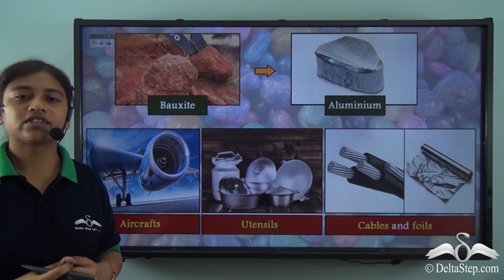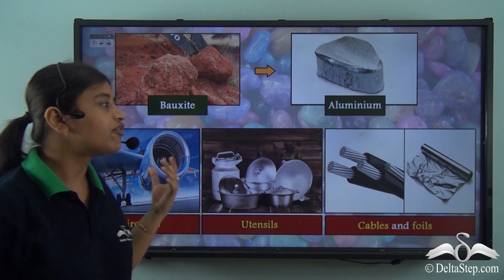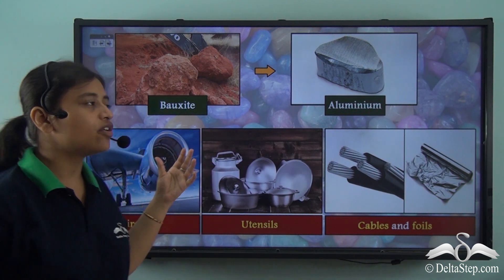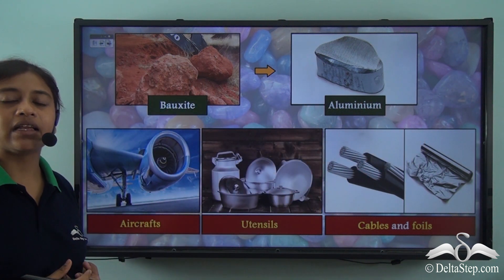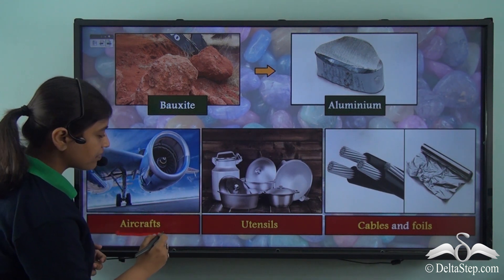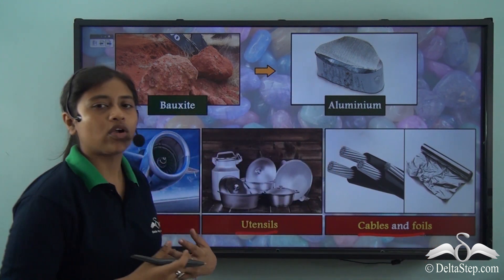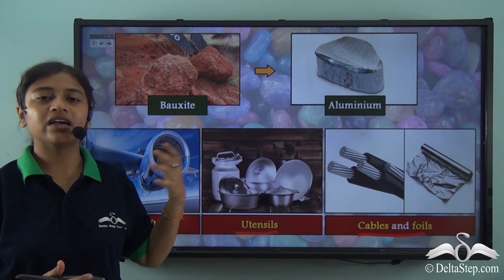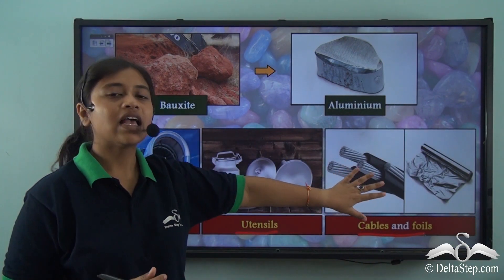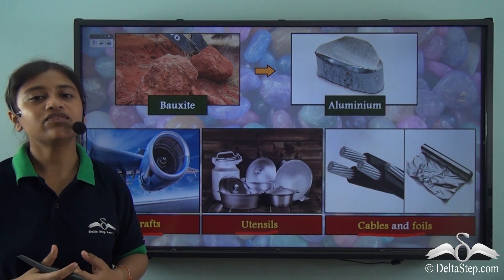Here is another important mineral — Bauxite. Bauxite, as we learnt earlier, is the mineral ore of Aluminium. Bauxite itself acts as a mineral, but it also acts as a mineral ore for Aluminium. Aluminium extracted from Bauxite is used for various purposes — in aircraft, in utensils we use on a daily basis, and in electrical cables and foils. Because Aluminium is a good conductor of heat and electricity, it facilitates electric wiring in households and keeps food warm through aluminium foils.